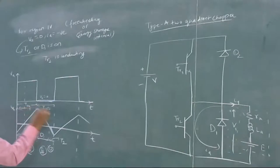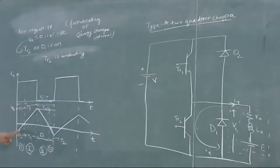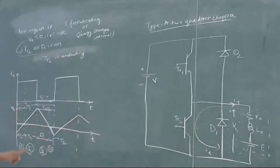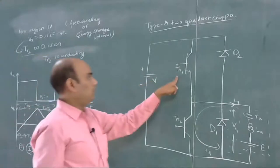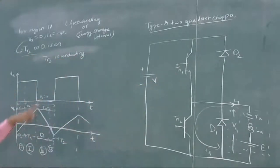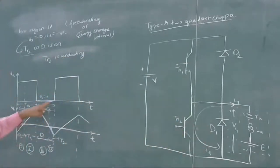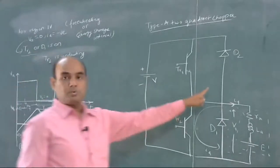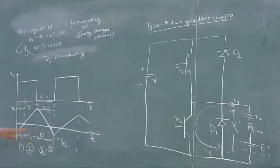In this way we can divide the whole time period T into 4 regions: in region 1, voltage is positive and current is negative so D2 is on; in region 2, voltage is positive and current is positive so TR1 is on; in region 3, voltage is 0 and current is positive so D1 is on; and in region 4, voltage is 0 and current is negative so TR2 is on.